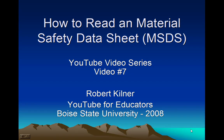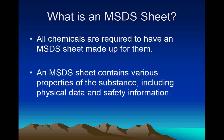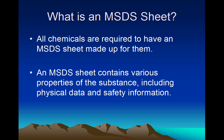Hi, this is Bob Kilner again with the seventh video in my YouTube video series, which is going to discuss how to read a Material Safety Data Sheet, or MSDS Sheet. The first thing we need to know is what an MSDS Sheet is. All chemicals are required to have an MSDS Sheet made up for them. An MSDS Sheet contains various properties of the substance, including physical data and safety information.